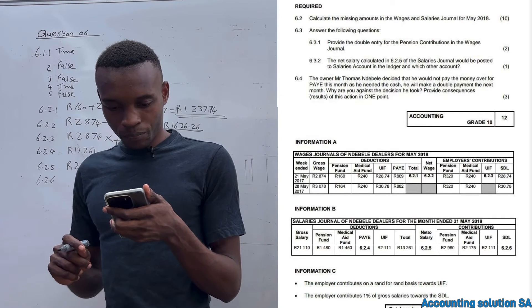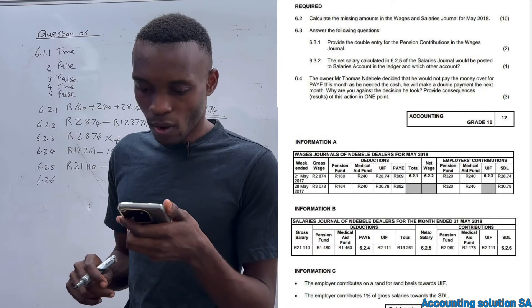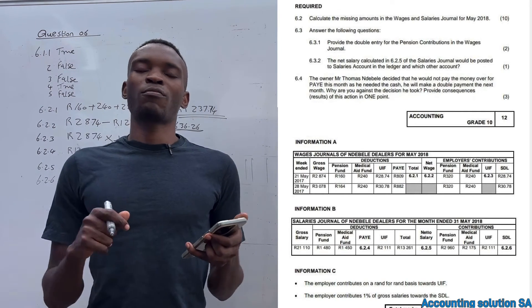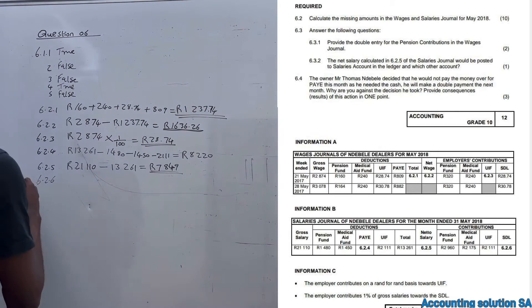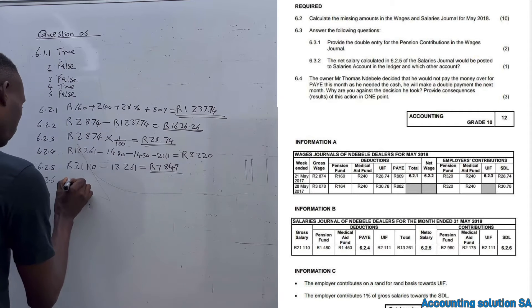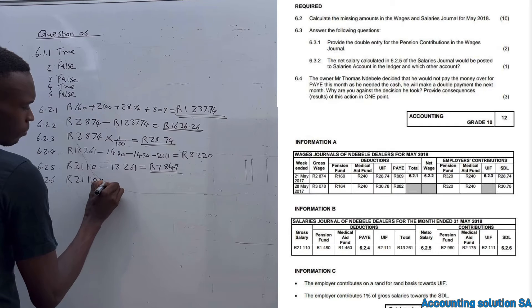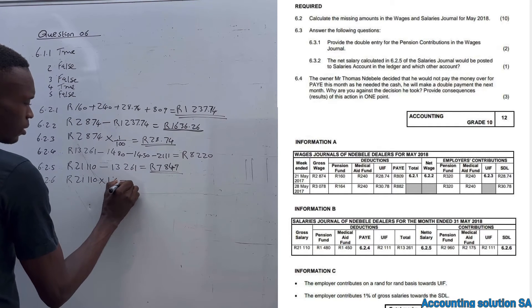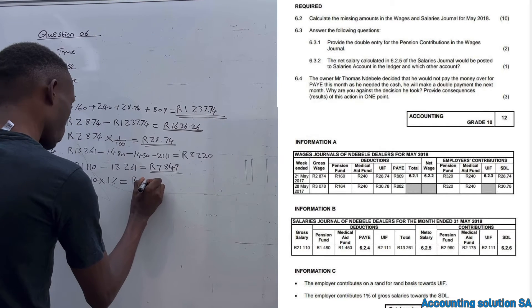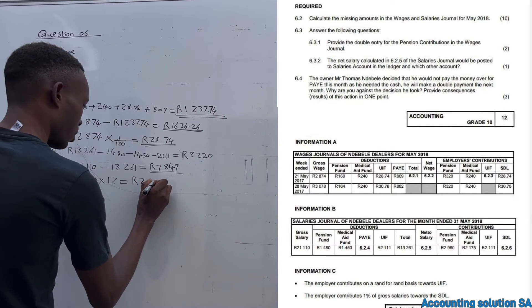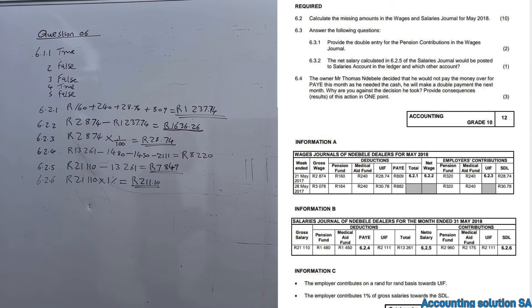The next one is 6.2.6 - SDL. Skills Development Levy is also 1% like UIF, of gross. Which means that we're just gonna take 21,110 multiplied by 1%, which is going to give you 211.10.